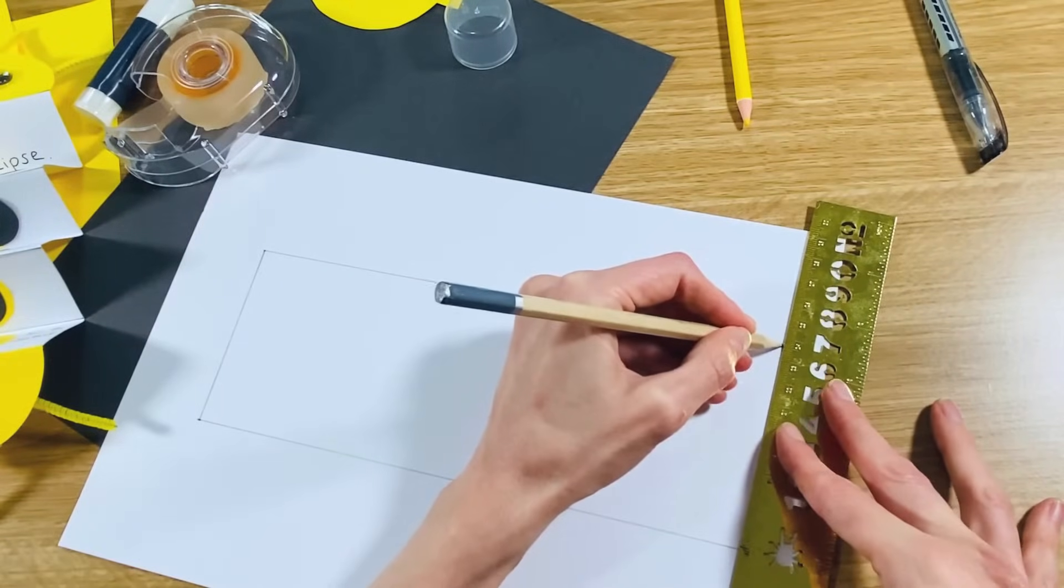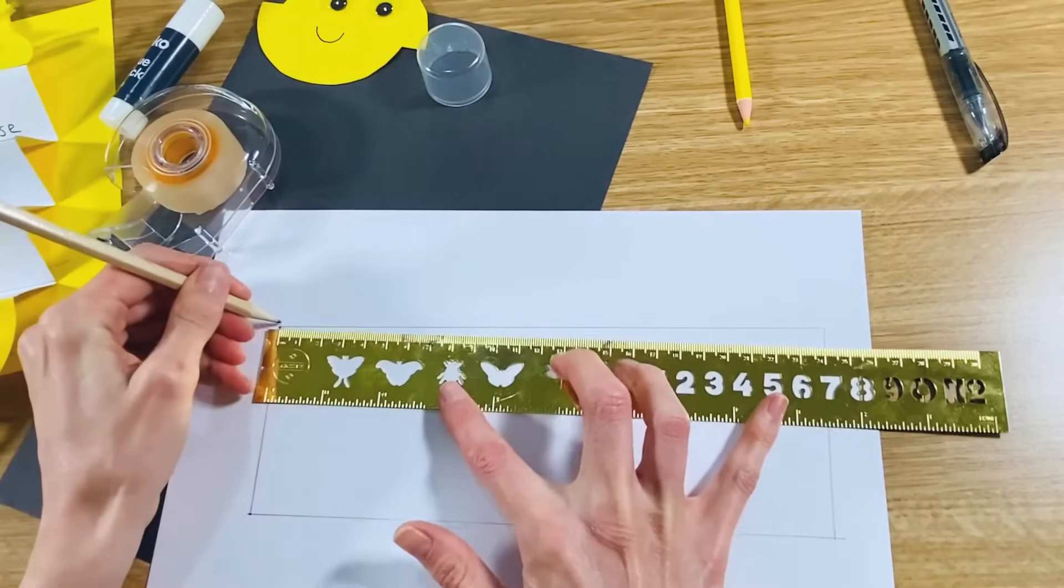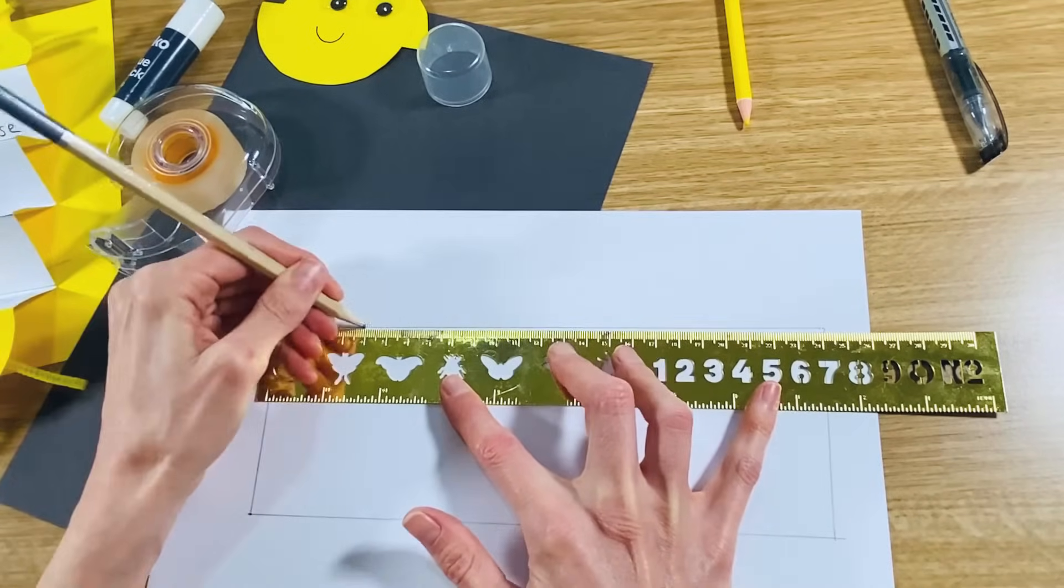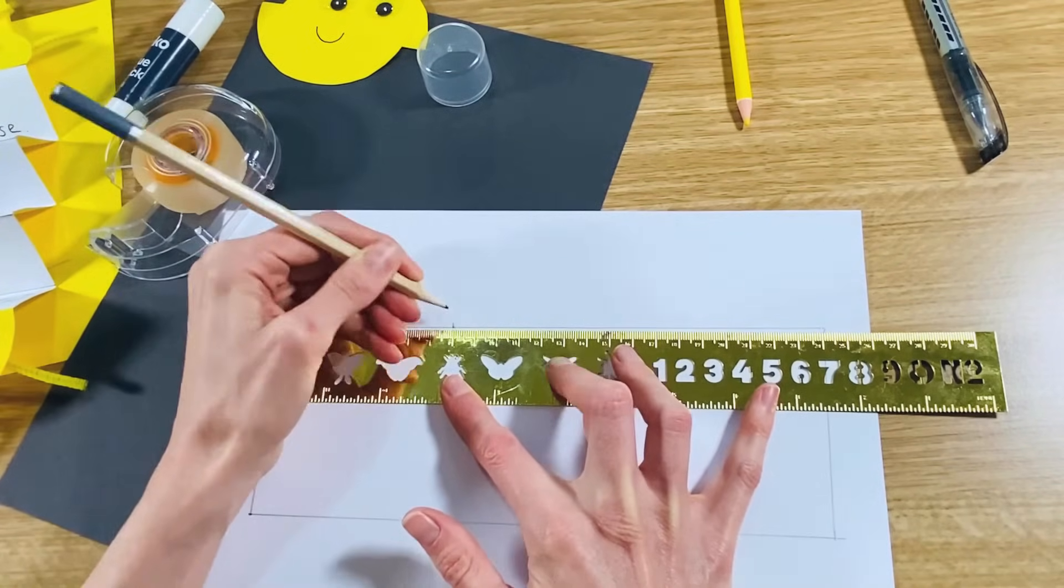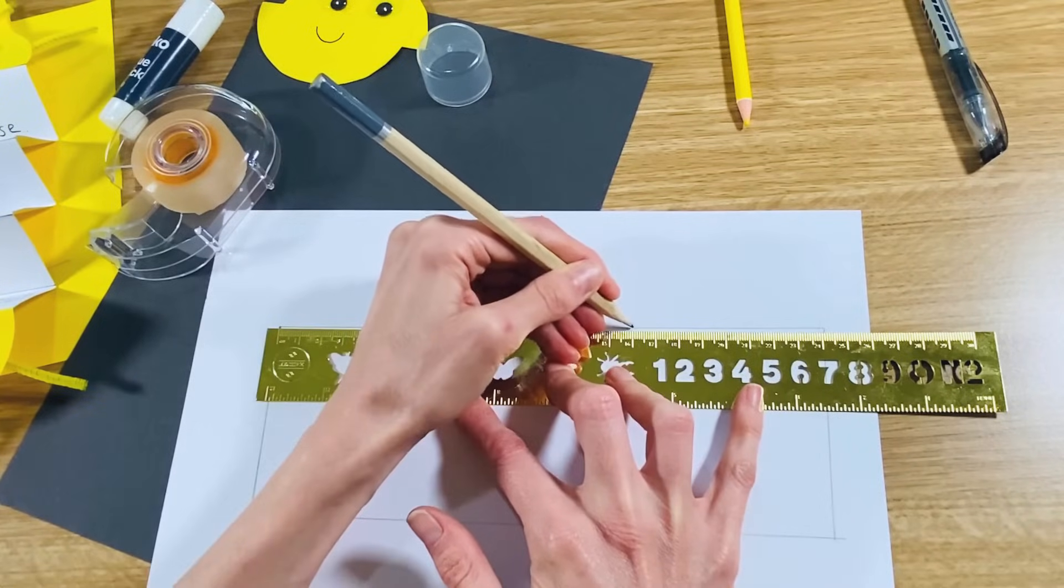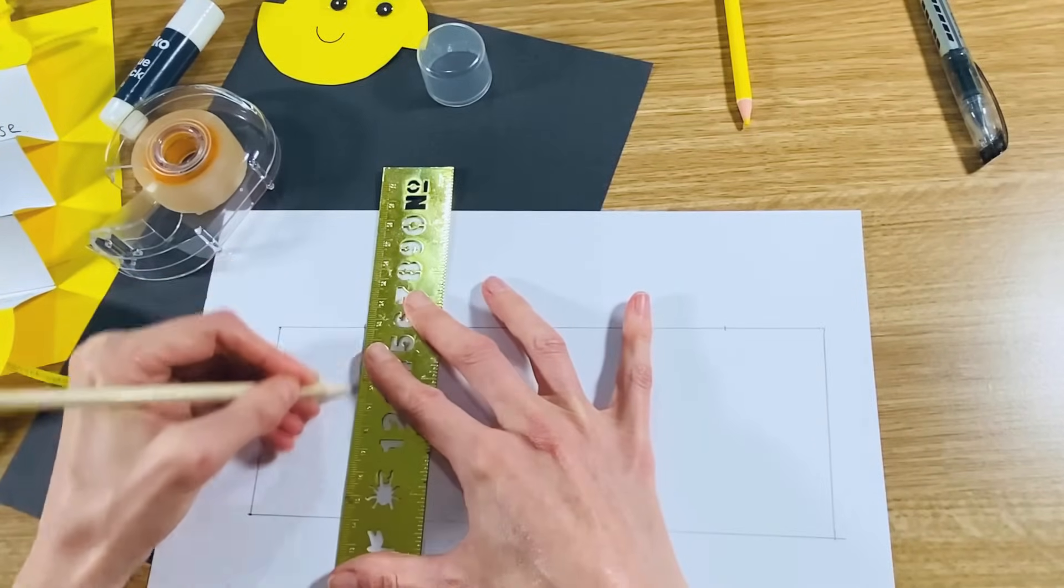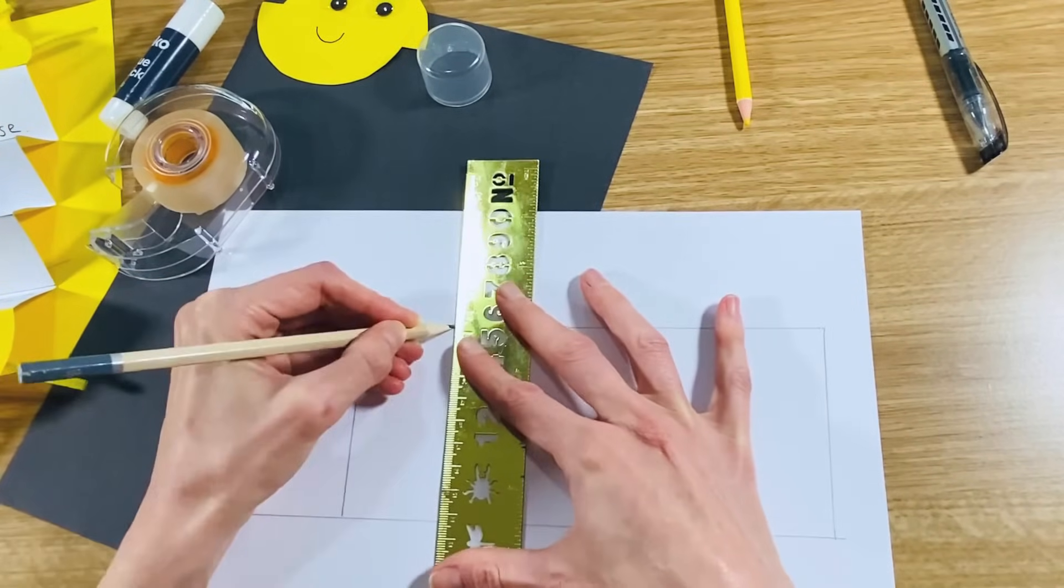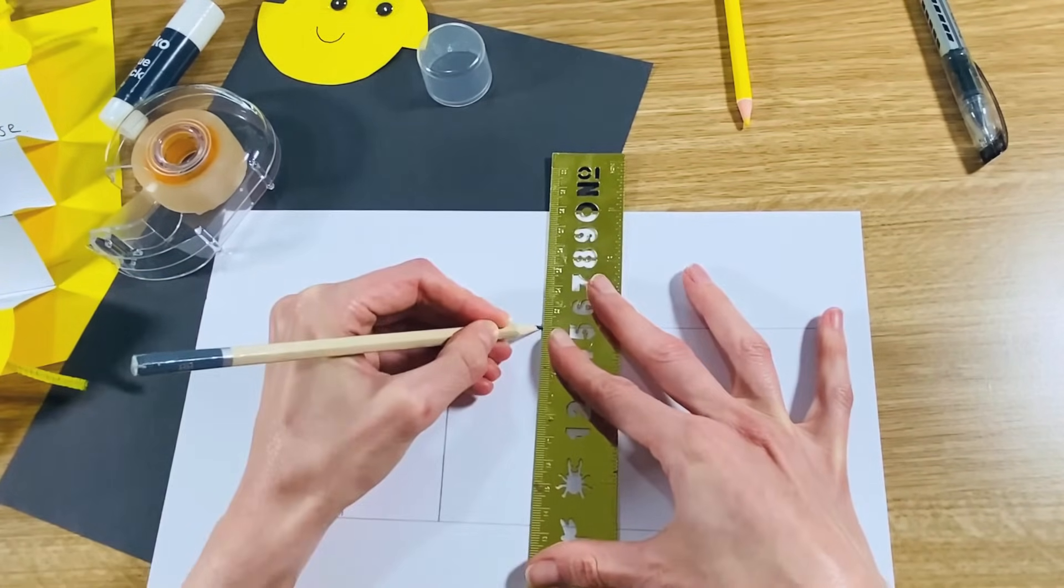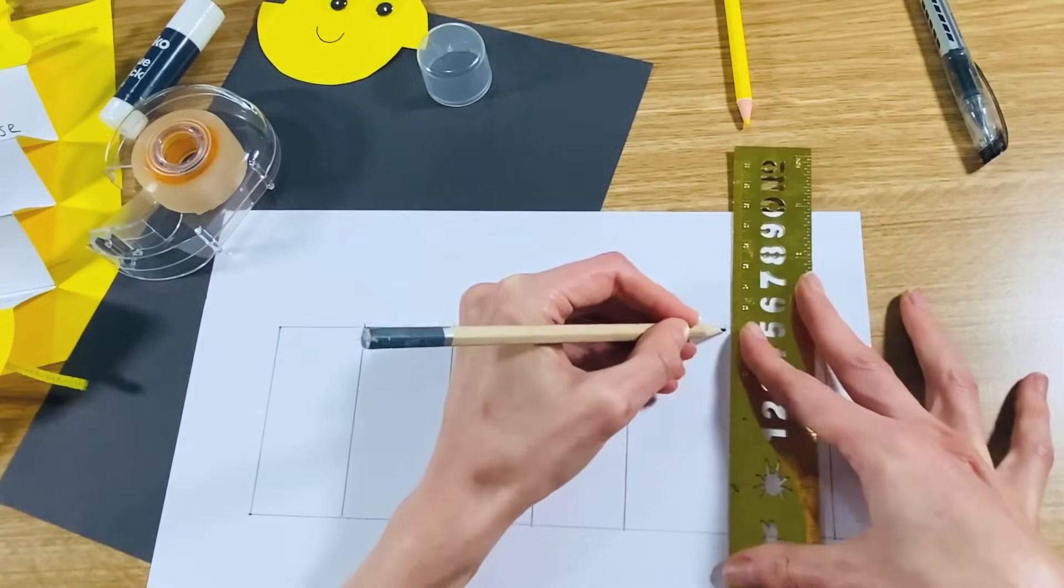So I've made a rectangle that's 24 centimeters, and then I'm going to mark out six sections and each section is going to be equal sized, so it's going to be four centimeters. And then just create those six rectangles.